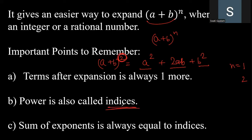Third point: if the power is 2, then every term in the expansion has a combined power equal to 2. For example, in a squared the power of a is 2; in 2ab, a has power 1 and b has power 1, which add up to 2; in b squared, the power is 2. So every term in the expansion has the same total power equal to n.